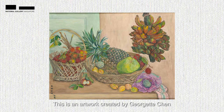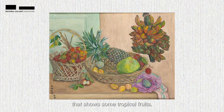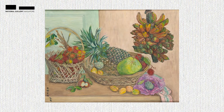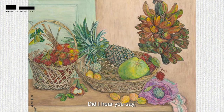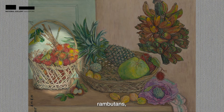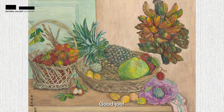This is an artwork created by Georgia Chen titled Tropical Fruits. This painting is a still-life painting that shows some tropical fruits. Can you name some of the fruits that you see in this painting? Did I hear you say pineapple, bananas, rambutans, pomelo, custard apple and star fruits? Good job!